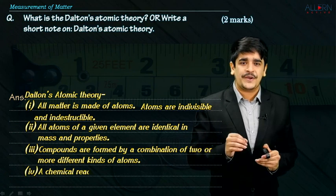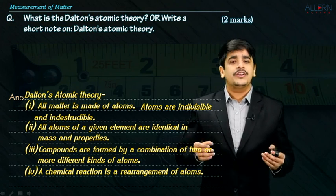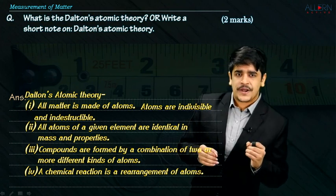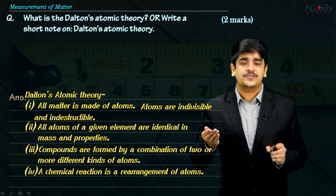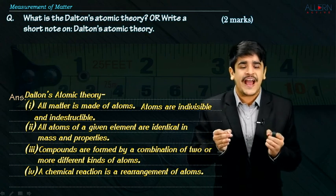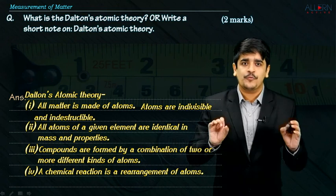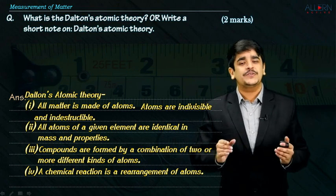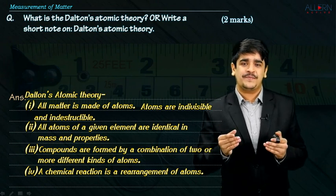Fourth and final point, I quote and I explain, a chemical reaction is simply nothing but a rearrangement of atoms. Understand, in a chemical reaction, we have reactants to the left and products to the right. During a chemical reaction, the reactant bonds are going to break and product bonds are going to get formed. And when this particular thing happens, it is only because of the fact that rearrangement of atoms is going to take place.